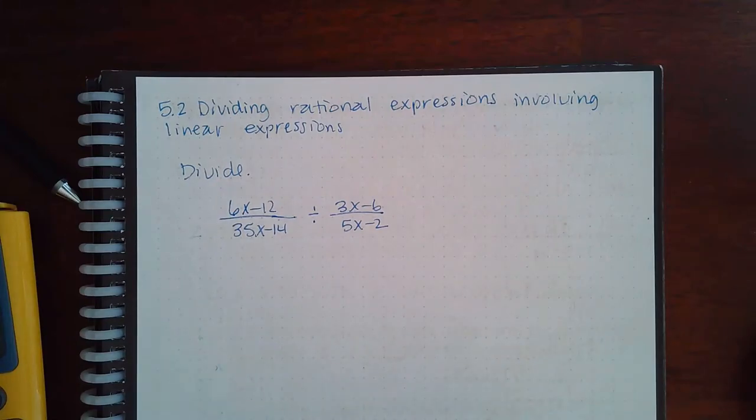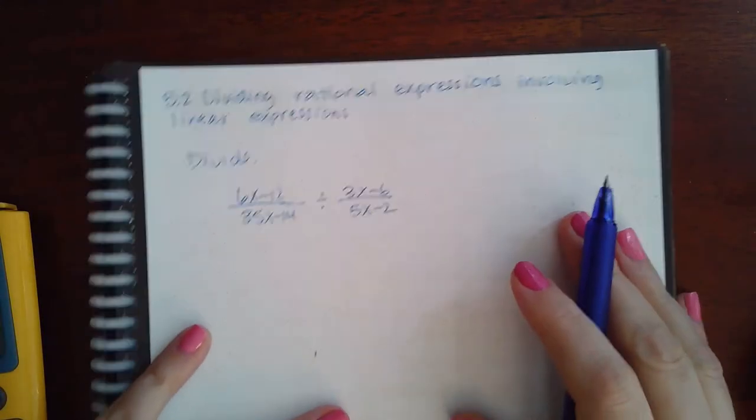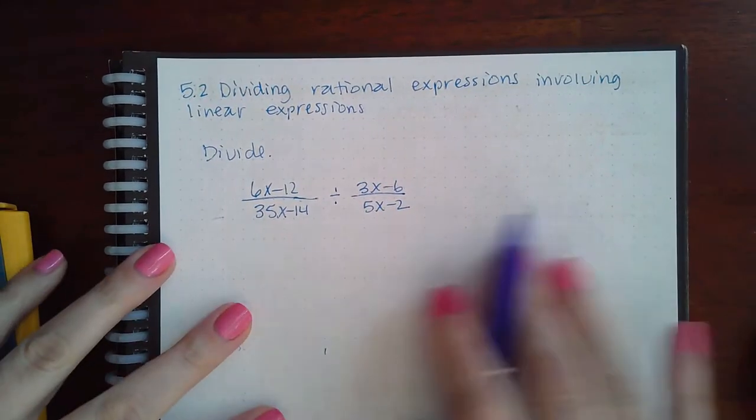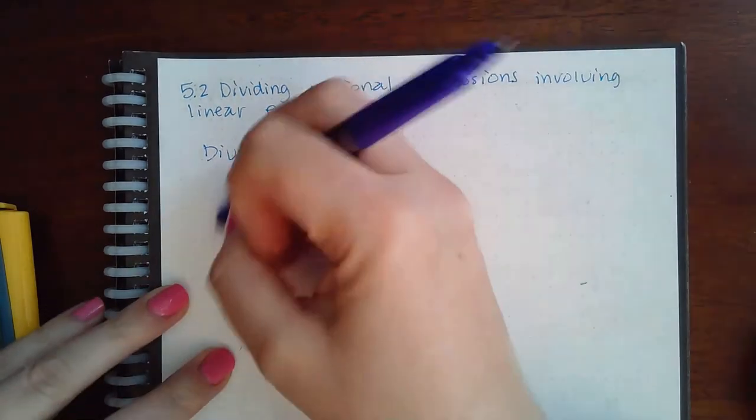Okay, here we are with 5.2 dividing rational expressions involving linear expressions. So just like before, we always do division by changing its location.